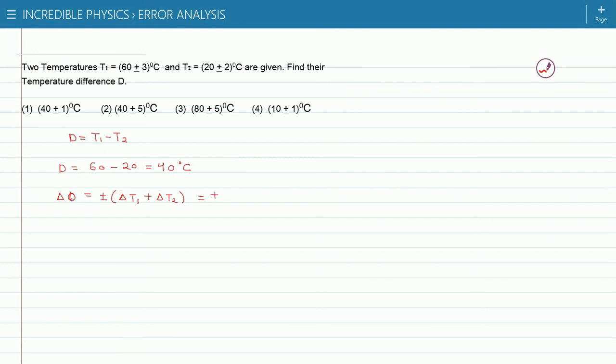Or plus minus 3 plus 2 equals to plus minus 5 degree Celsius. This is the error of the quantity D which is the difference of the temperatures.